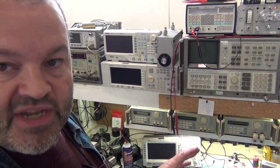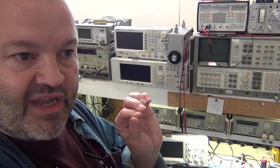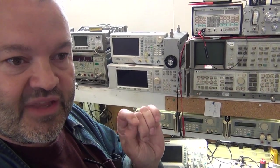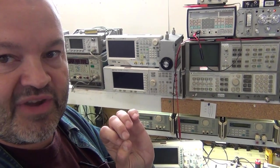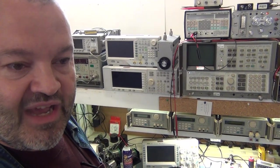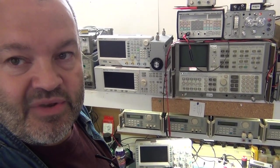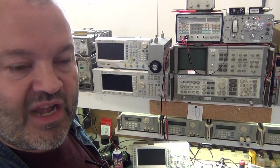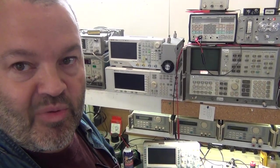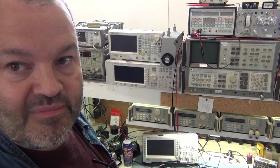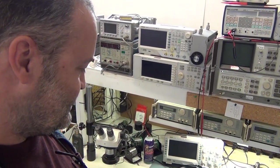But the other thing to watch out for is it will only calibrate on certain ranges. So one of the things that confused me when I first started trying to cal it is I would try to cal on the wrong range and it just won't, it'll act like it didn't work. So be careful. You have to have the exact number of decimal points on the display that the manual calls for when you're calibrating those.